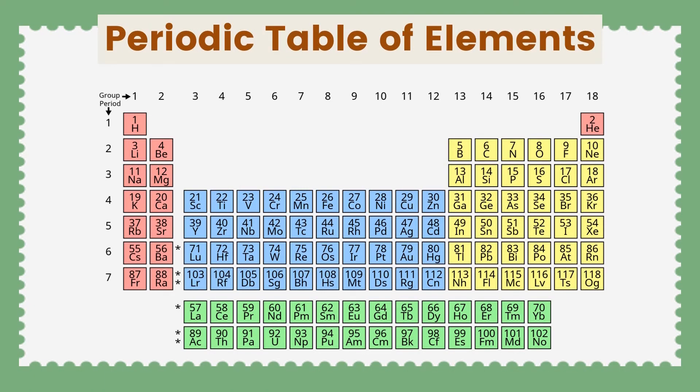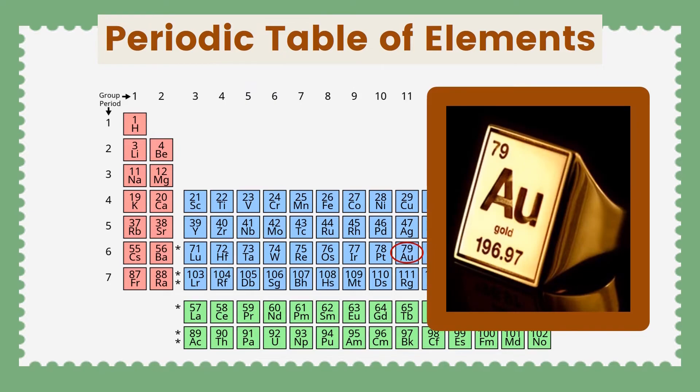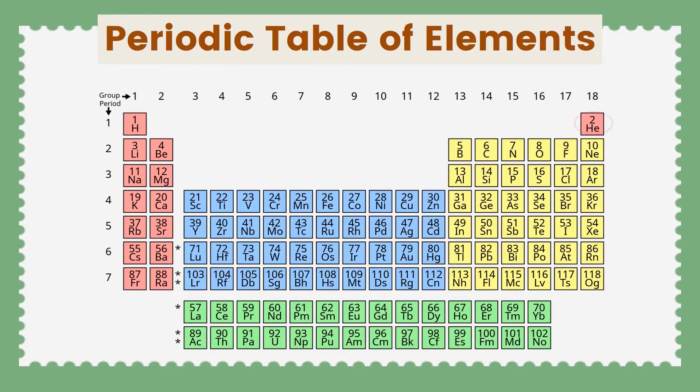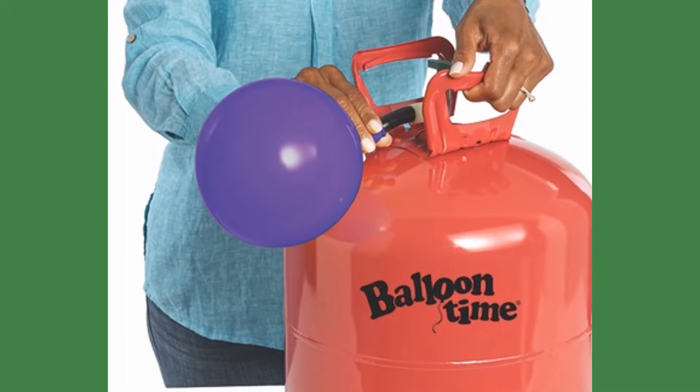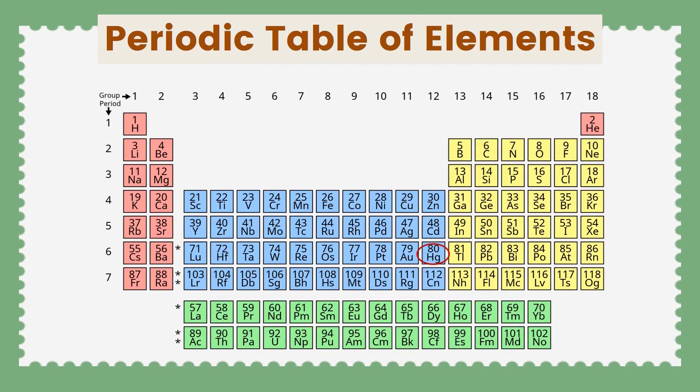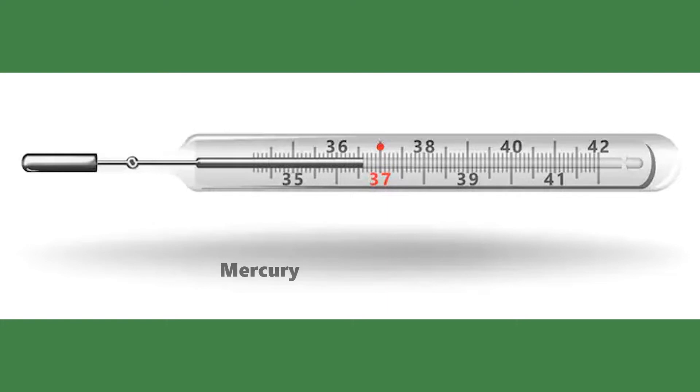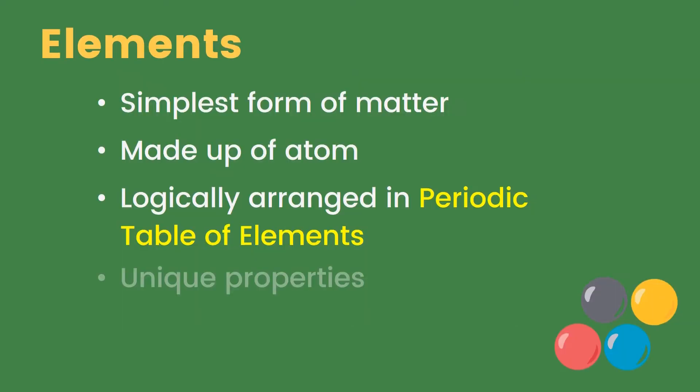Elements are logically arranged in the periodic table of elements. There are 118 elements in the periodic table. Some examples are gold, commonly used as jewelry, helium which is the gas inside balloons, and mercury which can be found inside the thermometer.